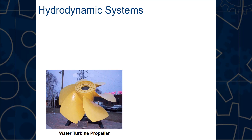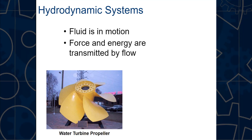A hydrodynamic system is like a water turbine propeller—a propeller on the back of a large boat that generates energy and forces the boat through the water. In a hydrodynamic system, fluid is in motion and the force and energy are transmitted by the flow. So an example of a hydrodynamic system would be the propeller on the back of a boat.